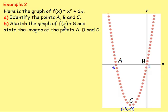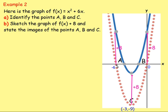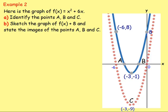For part b, sketch f of x plus eight. Since there's a plus eight on the end, every single point moves up eight. Point a moves from negative six zero to negative six eight. Point b moves from zero zero to zero eight — so it now crosses the y-axis at eight. Point c moves from negative three, negative nine to negative three, negative one. That gives the new graph.